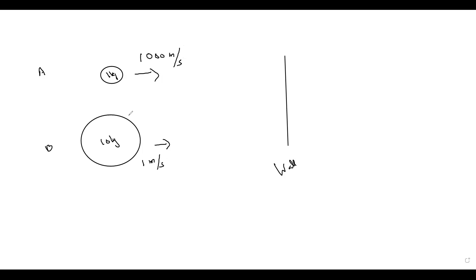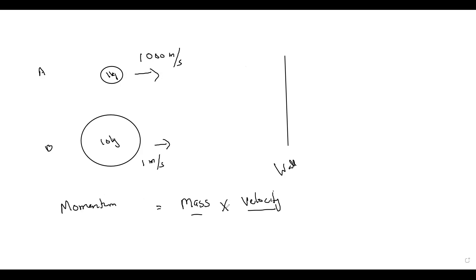In that case you will say A. Your answer changes because now you know the speed as well. So we can conclude that when an object hits a surface, two things are important: mass and velocity. Momentum is the product of mass and velocity — when mass is multiplied by velocity, we get a quantity known as momentum.